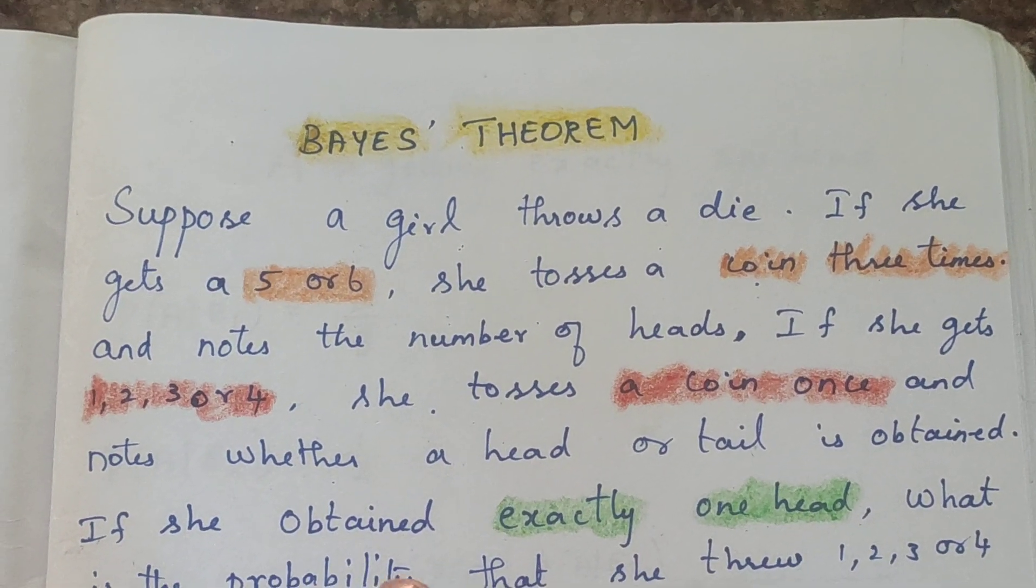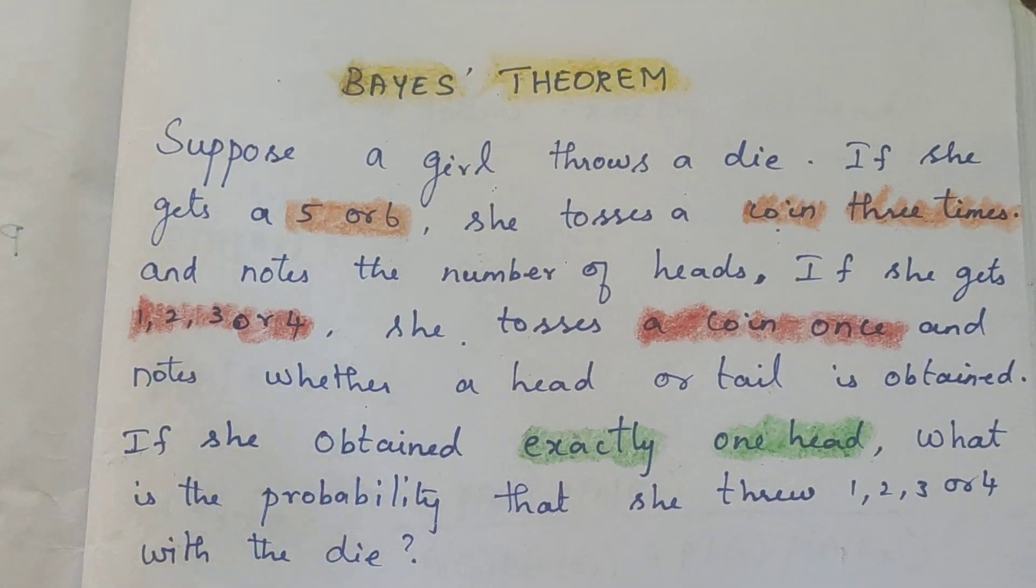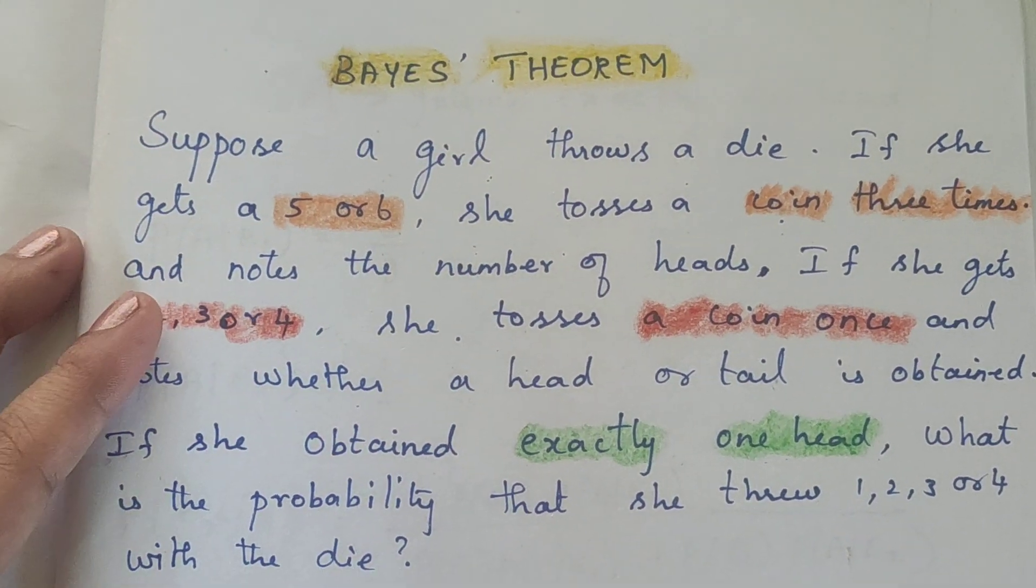If she obtains exactly one head, what is the probability that she throws 1, 2, 3, or 4 with that die? So this is our situation.